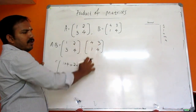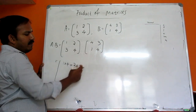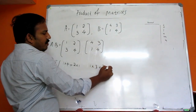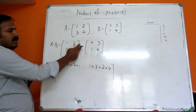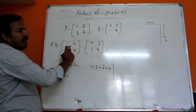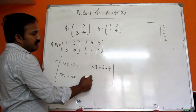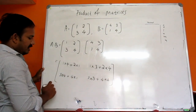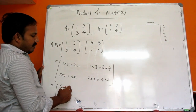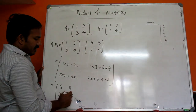That means row into column. The first element is 1 into 4 plus 2 into 1. Then first row, second column: 1 into 3 plus 2 into 4. Then 3 into 4 plus 4 into 1, and 3 into 3 plus 4 into 4. So: 4 plus 2 is 6, 3 plus 8 is 11, 12 plus 4 is 16, and 9 plus 16 is 25.